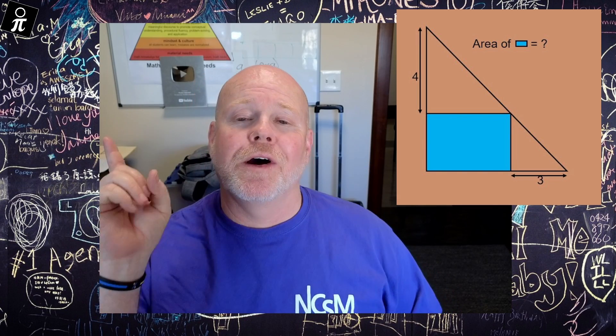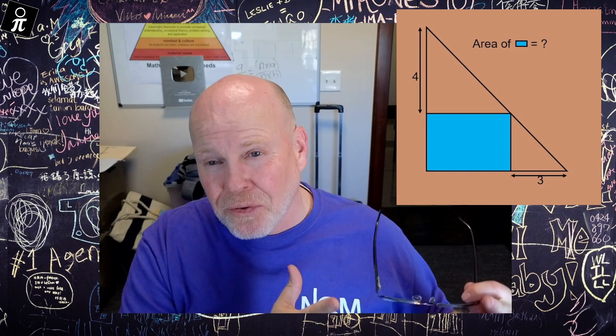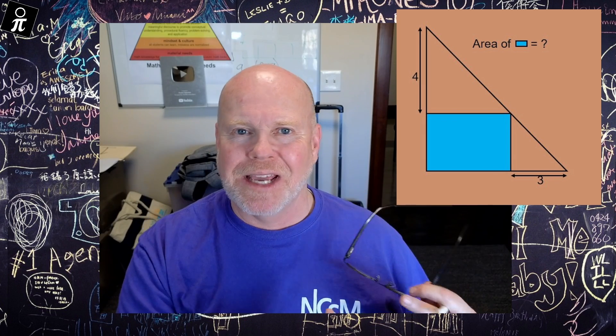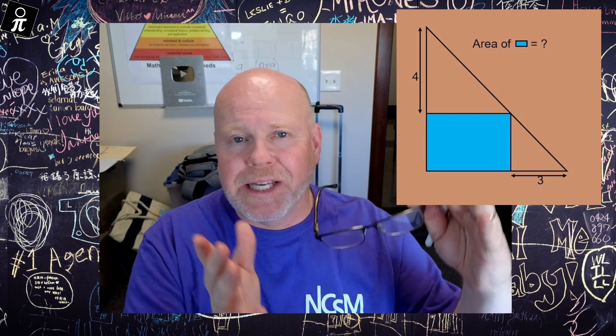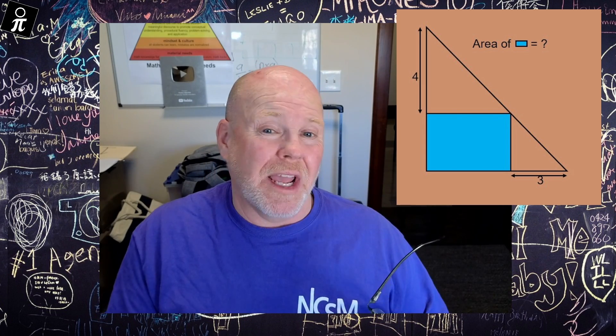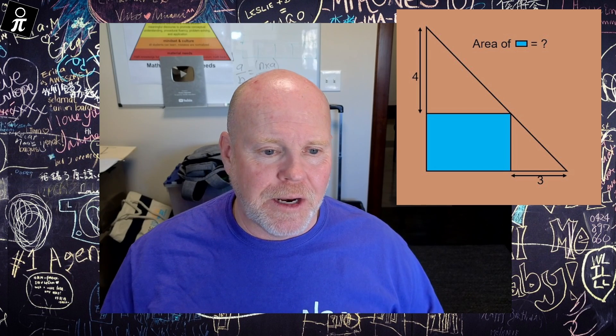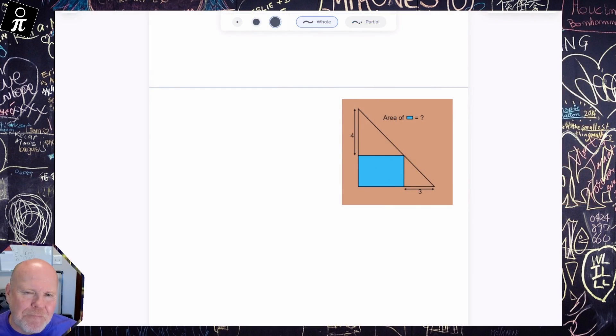All right, in this video, we are going to try and find the area of this blue rectangle nestled nicely inside of a right triangle. So let's see if we could get working on this. I think there's going to be two solutions. One is kind of a longer one, one is going to be quicker. Stick around for the short, beautiful one, but I'm going to do the long one first and then wrap us up with a surprising conclusion at the very end.